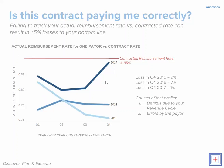This gives us a very clear year-over-year comparison of the actual reimbursement rate for a given payer. Now this red line at 85% — that's the contracted reimbursement rate. In a perfect world we'd expect all these lines to be right around 85%, but they're not.